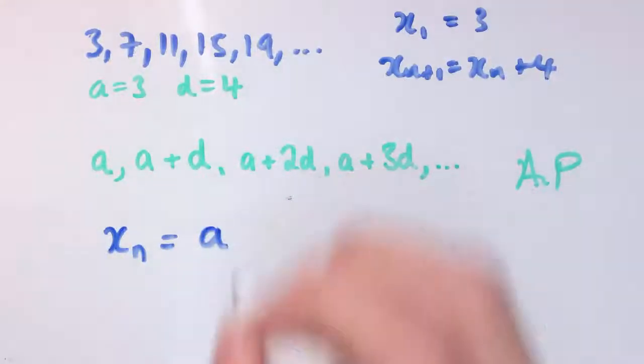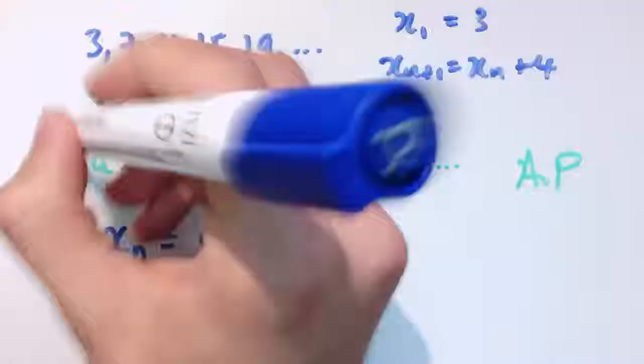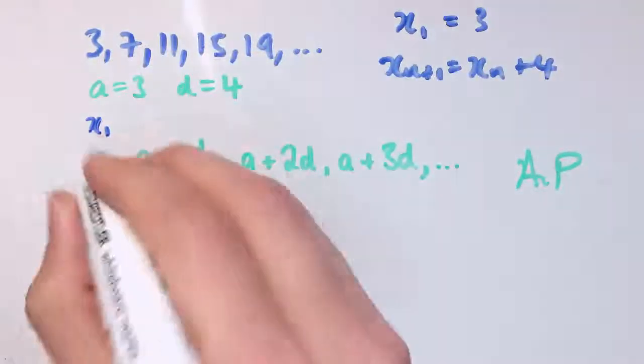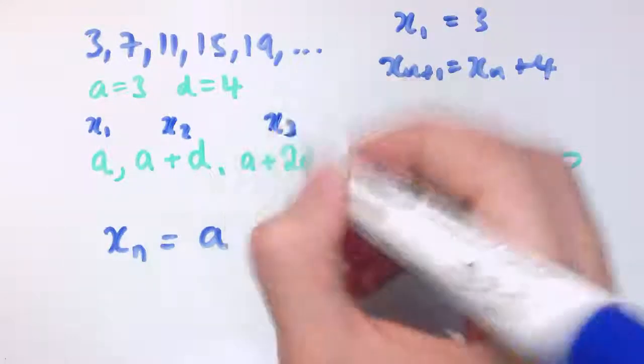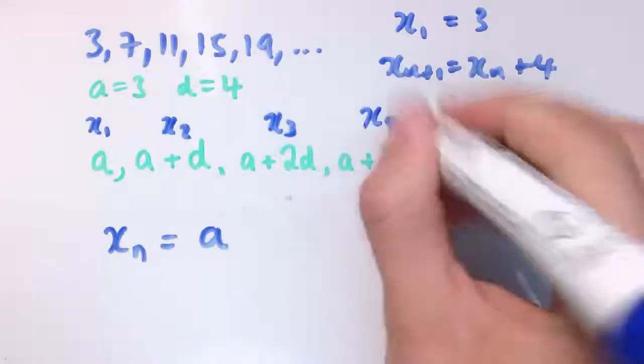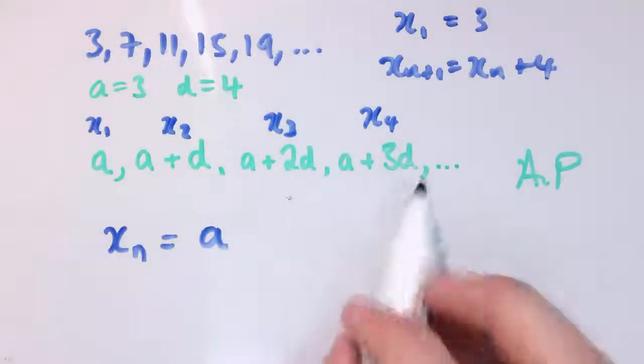Now I'm going to add on d a certain number of times. Let's think about how many times we add on d. Well, if this one is x₁, I haven't added on any d's. For x₂ I've added on 1d. For x₃, 2d's. For x₄ I've added on 3d's.